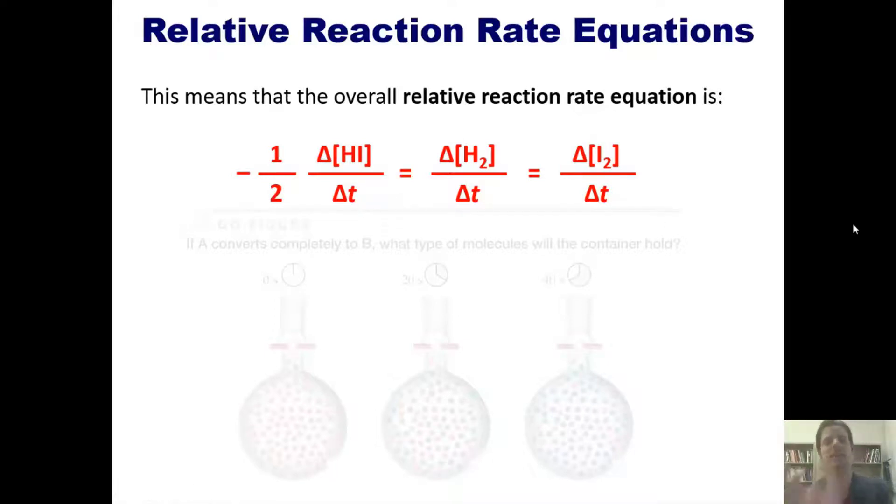which equals delta I2 concentration over delta t. In other words, the stoichiometric coefficient 2 that was in front of the HI in the balanced chemical equation now goes in a denominator multiplied through by delta concentration over delta t. Hopefully that makes sense.